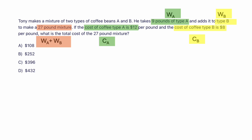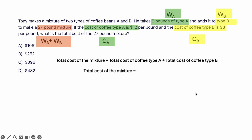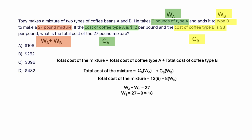What is the cost of the 27-pound mixture? The total cost of coffee type A plus total cost of coffee type B gives you the total cost of the mixture. Total cost of type A = CA times WA, plus CB times WB. Plugging in: 12 times 9, plus 8 times WB. We don't know WB, but WA + WB = 27, so WB = 27 − 9 = 18. Plugging that in: 12×9 + 8×18 = 252. So the answer is $252.